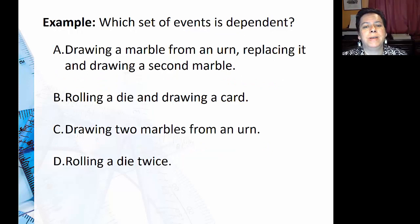In this example, we're going to determine which set of events is dependent. If I draw a marble from an urn and then I put it back and draw a second marble, did I change the probability? No, because I basically replaced it. As long as I put the marble back, I didn't change the probability for the second marble. If I roll a die and draw a card, those aren't talking to each other, so those are independent events.